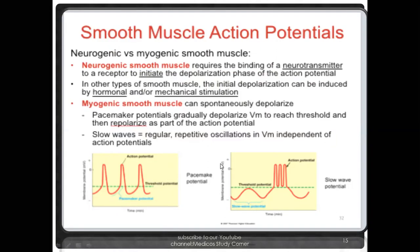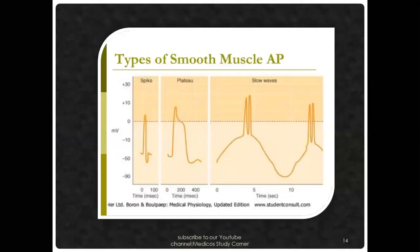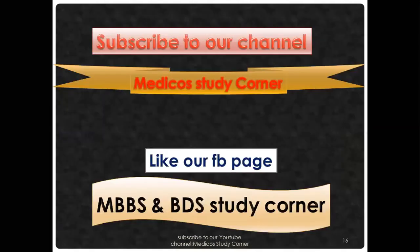Myogenic smooth muscle can continuously depolarize. Pacemaker potentials gradually depolarize the membrane to reach a threshold and then fire an action potential — this is the slow wave potential. You need to differentiate between neurogenic and myogenic action potentials. Remember action potential types, atrophy, hypertrophy, hyperplasia, and rigor mortis. That's all — thank you so much and Allah Hafiz.